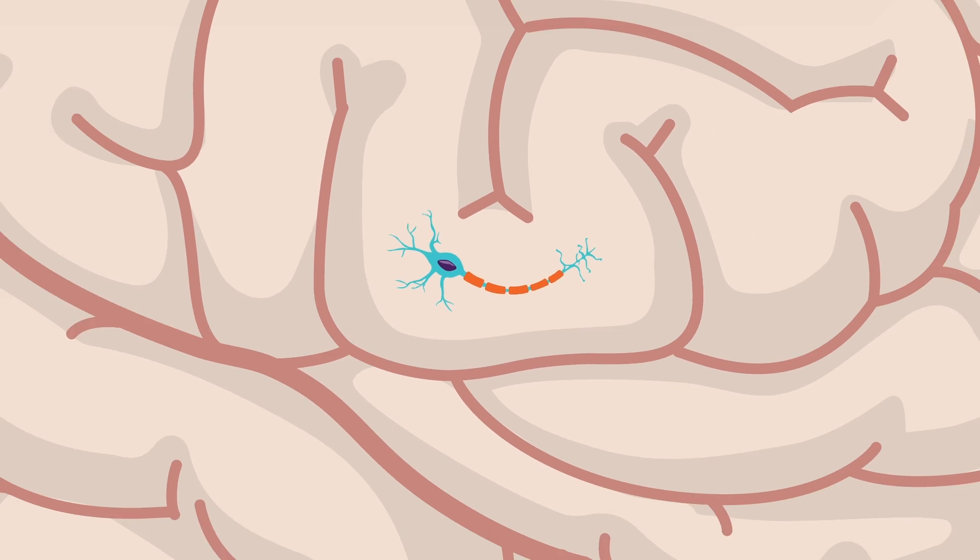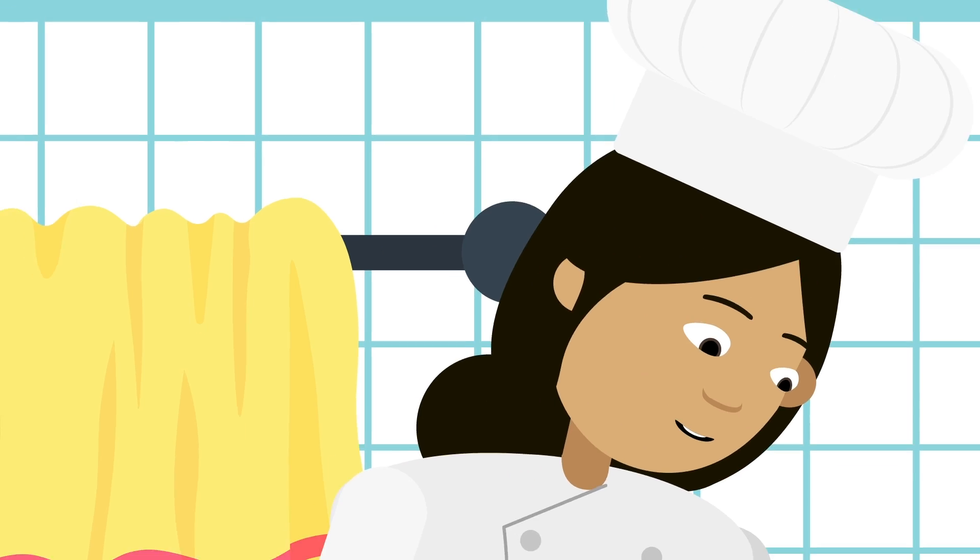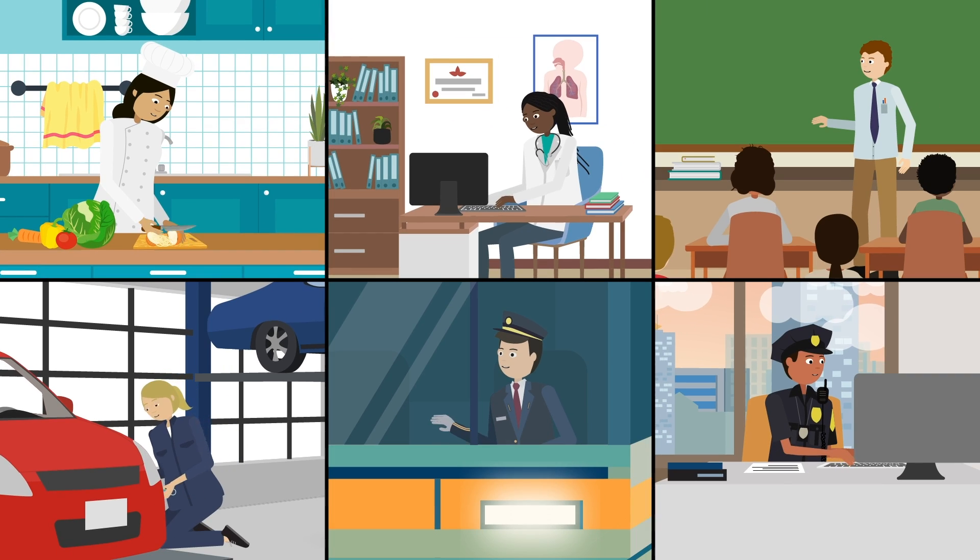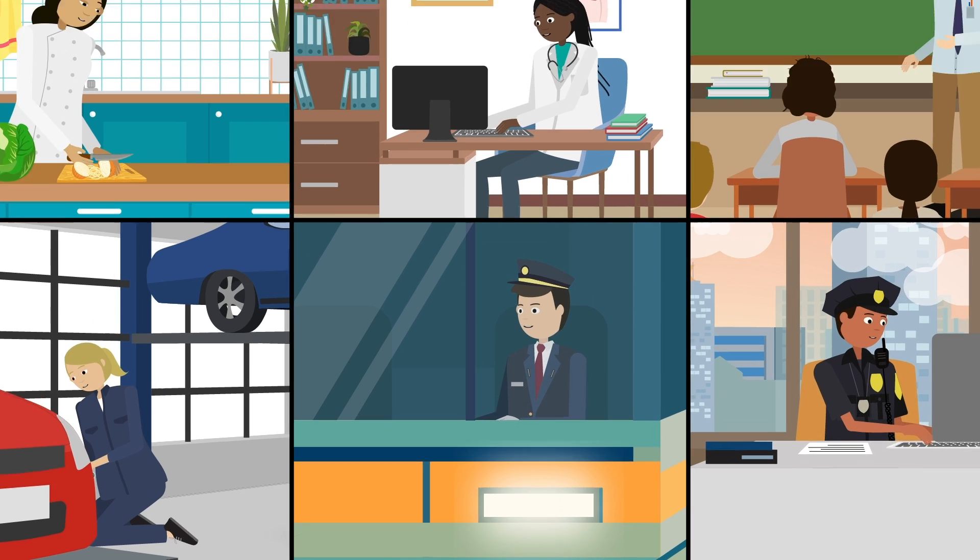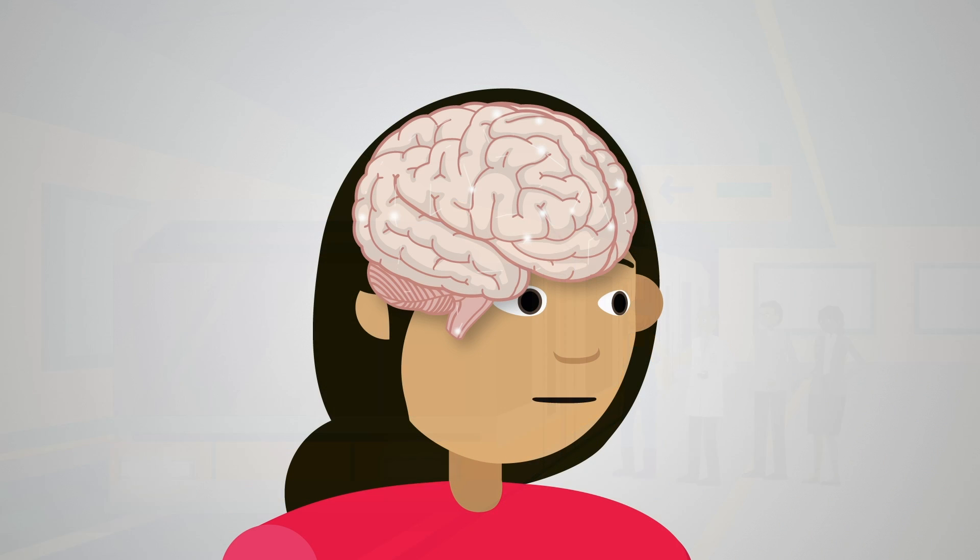Neurons carrying out similar functions are seen as unique structures. However, interactions between these structures are essential for healthy brain functioning. This is similar to society, where people perform different jobs. We need everyone to do their jobs for society to function. It's similar in the brain.